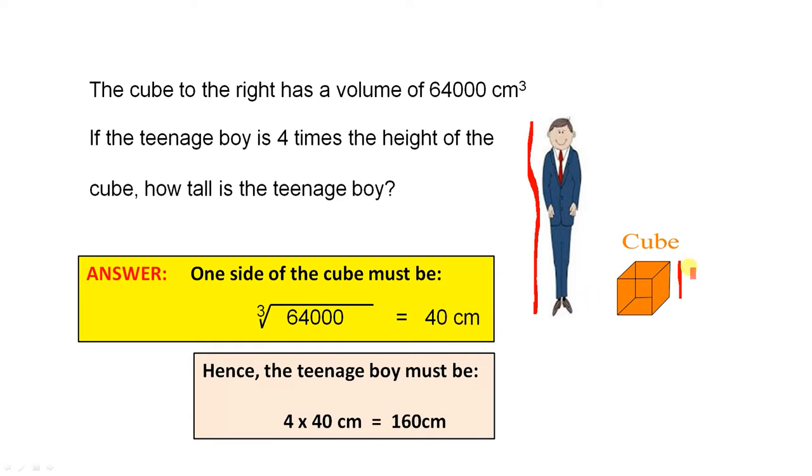Hence, the side of this cube, so that height there, is 40. There it is there, right? That's the height. 40 centimeters. Now, if the boy is four times that height, four times 40 gives you 160 centimeters. So that's the height of the boy.